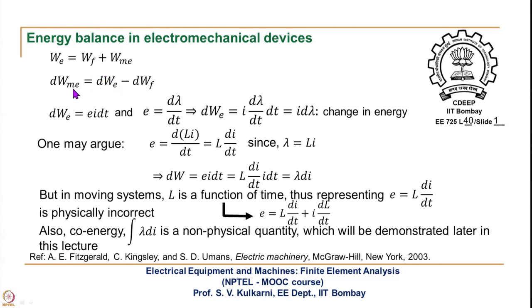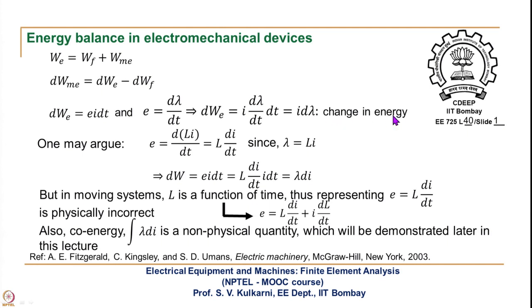The change in mechanical energy, DW_ME, will be equal to the change in electrical energy minus the change in field energy. DW_ME is E·I·dt, where E is voltage and I is current. E·I gives power, and power into time is energy. E is also the EMF — the induced voltage — which is the rate of change of flux linkages lambda. Therefore DW_ME is given by I·d(lambda)/dt · dt, which gives I·d(lambda) as the change in electrical energy.